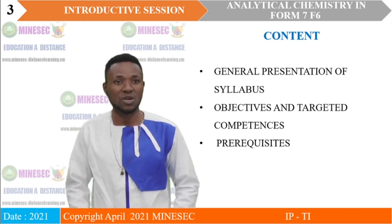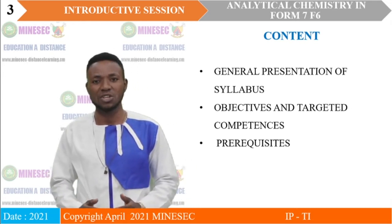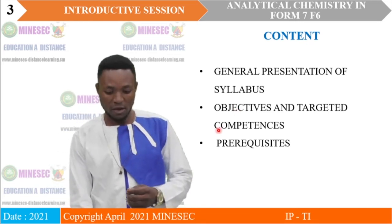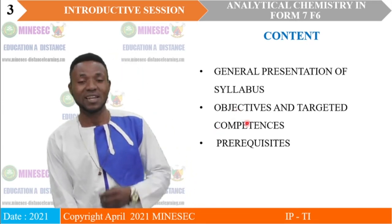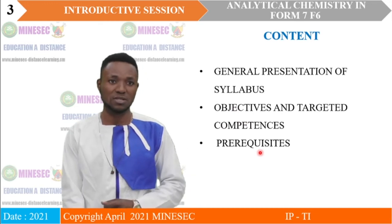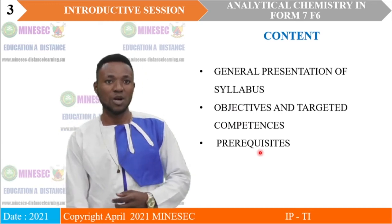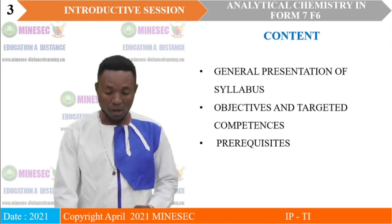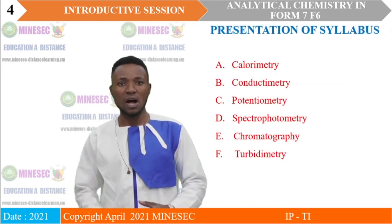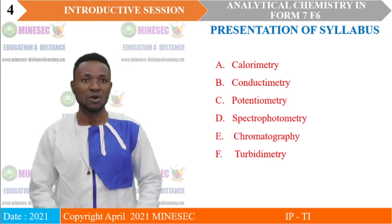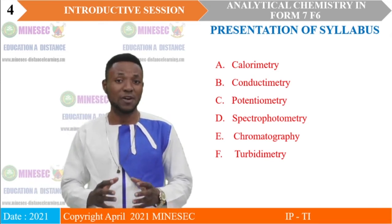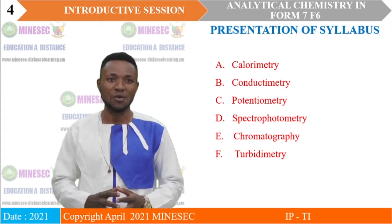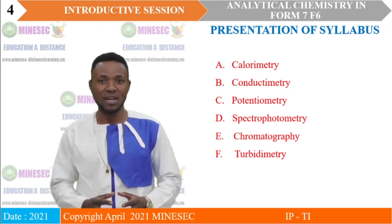We will start with the general presentation of the syllabus, followed by the objectives and the targeted competencies, and we are going to present the prerequisites. Concerning the syllabus of Analytical Chemistry in Form 7, there are six main modules.